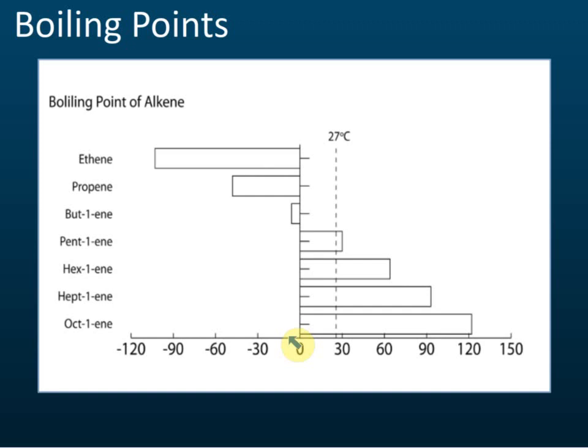Note that these are boiling points, not freezing points. The freezing point of water is zero degrees Celsius, but that's for water. For alkenes, these values shown are the boiling points, not the freezing points.